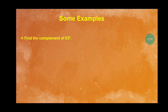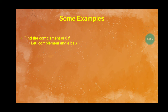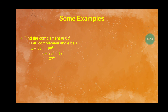Some examples. Find the complement of 63 degrees. Let the complement angle be x. Since complementary angles sum to 90 degrees: x plus 63 equals 90 degrees. Therefore x equals 90 minus 63, which gives x equals 27 degrees.